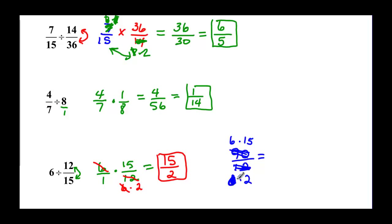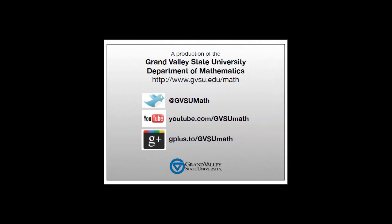So the 6s cancel each other out and we're left with 15 over 2. I hope so. So guys...